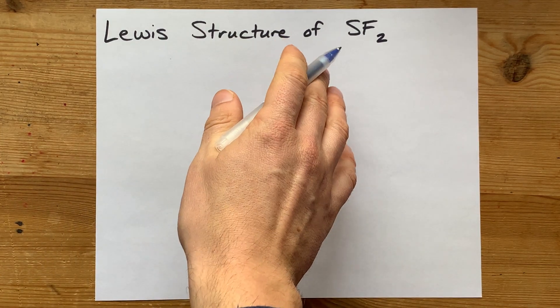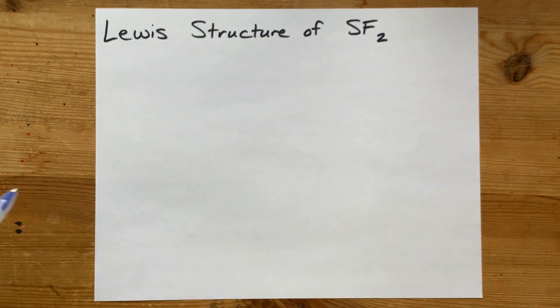We're going to draw the Lewis structure for SF2, sulfur-difluoride.